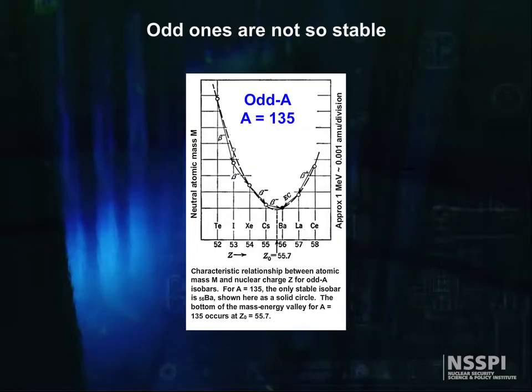For odd number of nucleons, the graph looks quite different. In order to be odd, there must be an odd number of either protons or neutrons, with an even number of the other sort of nucleon. The energy valley is generally steeper than even A valleys, meaning there's more driving force in decay, and there's usually a single stable nuclide at the bottom of the valley. In this particular case, it's barium-135.